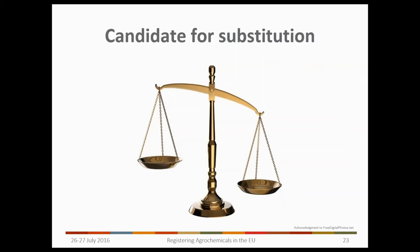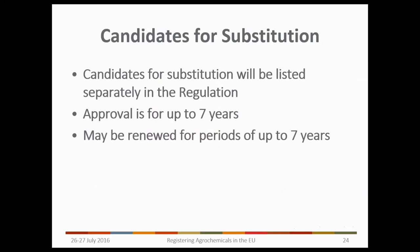We also have this new concept of candidates for substitution. If your substance qualifies, it will be listed separately within Regulation 1107. The approval period will be reduced — up to 10 years, compared to 10 years for a standard active substance and 15 years at renewal for a standard substance. Candidates for substitution can be renewed for periods of up to seven years, so there is a significantly reduced approval period.